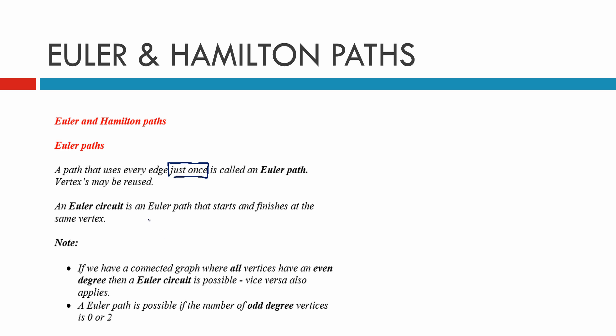An Euler circuit is a path where we can only use every edge just once, but it starts and finishes at the same vertex.